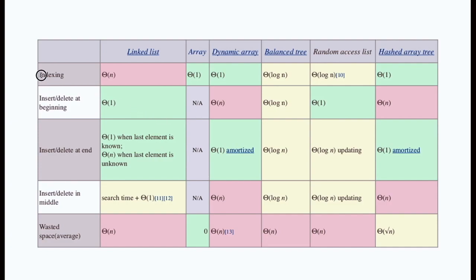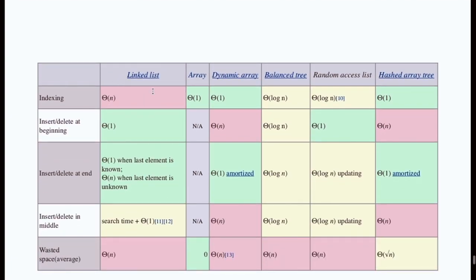This tells clearly indexing. In indexing linked list takes big O(n) of time complexity. The array uses only big O(1). There's the least worst complexity ever. Means this is very good complexity. Big O(1) means a constant time refers to it. A dynamic array also big O(1). Balanced tree takes a little bit more complex, big O(log n). Random access list big O(log n). And hash array tree big O(1). This is also good.